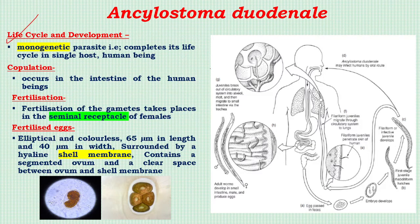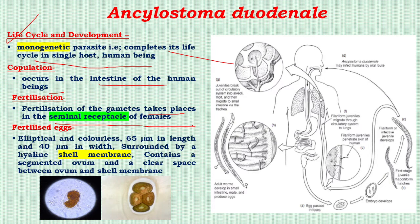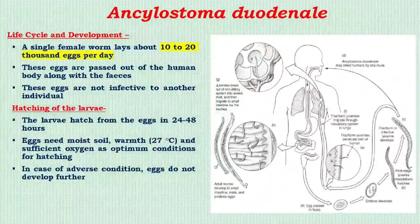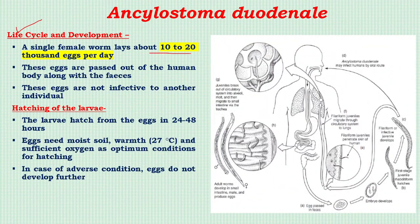Regarding life cycle and development: this is a monogenetic parasite completing its life cycle in a single host — human beings. Copulation occurs in the intestine; fertilization of gametes occurs in the seminal receptacle of the female. Fertilized eggs are elliptical and colorless, 65 micrometers in length and 40 micrometers in width, surrounded by a hyaline shell membrane containing a segmented ovum. A single female worm lays about 10,000 to 20,000 eggs per day, passed out with fecal matter. These eggs are not infective to other individuals.